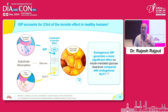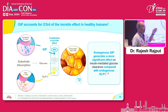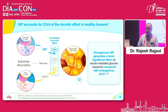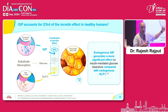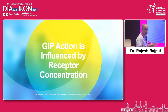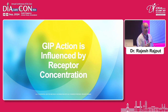Incretin hormones are therefore critical in maintaining euglycemia in health. We already know the concept of GLP-1, but because our understanding has now changed, GIP is equally important — not only in maintaining euglycemia but also in maintaining fat where it should remain in the body. Let's understand more about GIP and where its receptors are distributed.